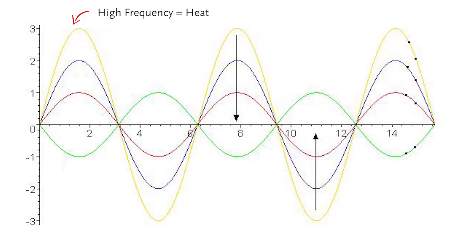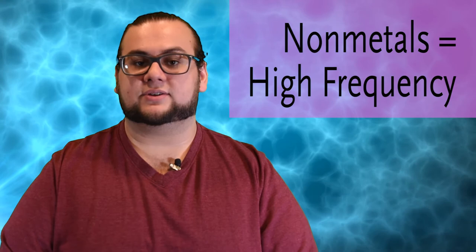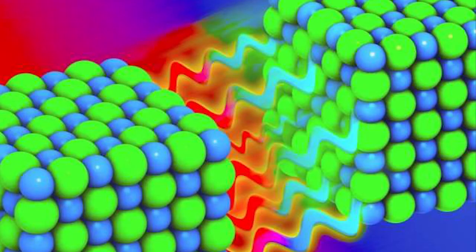High frequency vibrations are associated with the heat of an object, while low frequency vibrations are associated with the sound of the material. Therefore, non-metal materials have a high frequency vibration, which means they won't let heat pass as easily. What other things are affected by thermal conductivity?